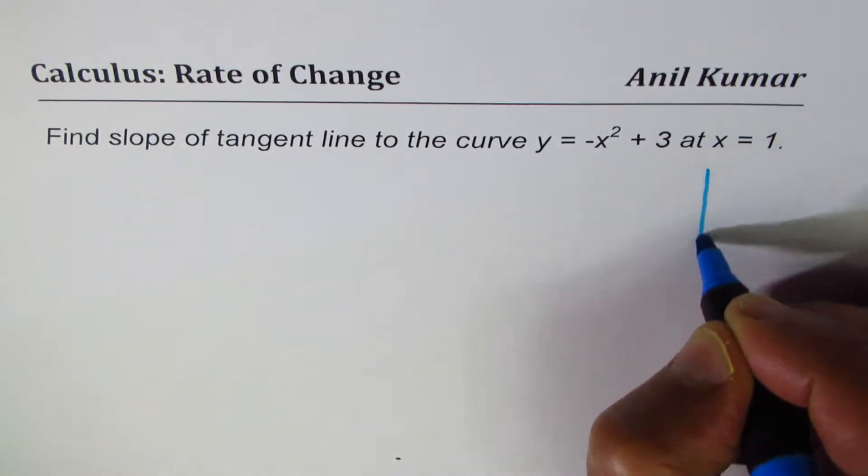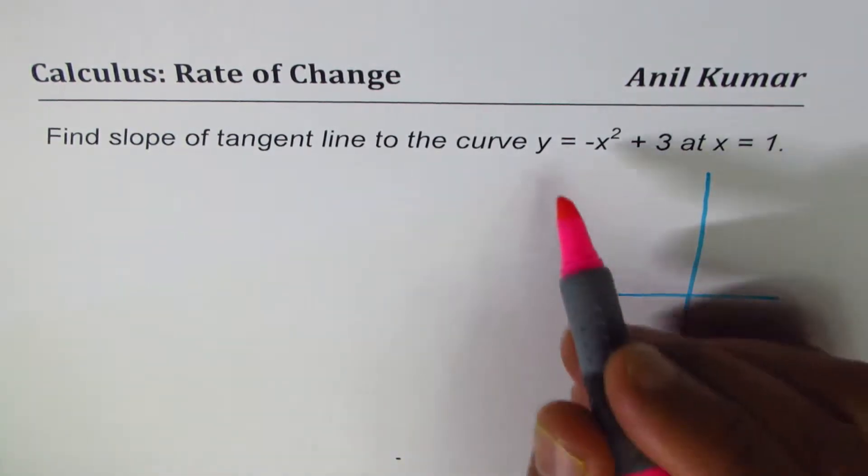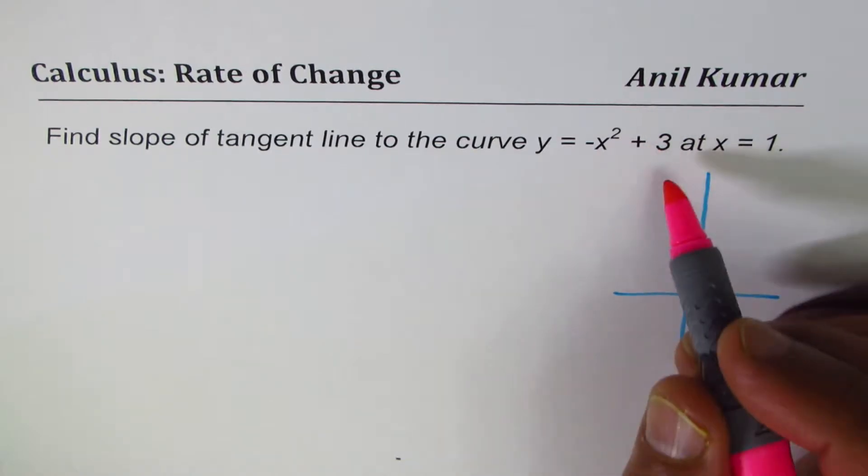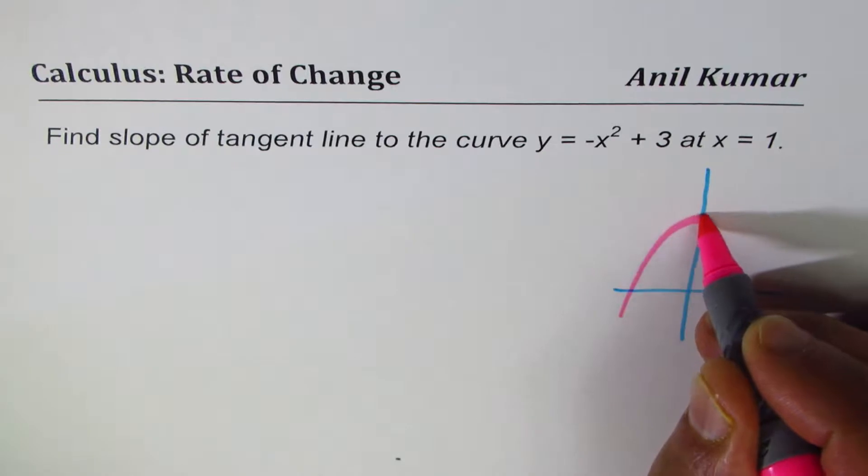So let me make a rough sketch here. We have a parabola which opens downwards, -x² + 3. It opens downwards and it has been translated 3 units up, so kind of like this.